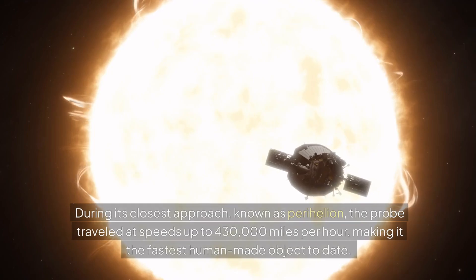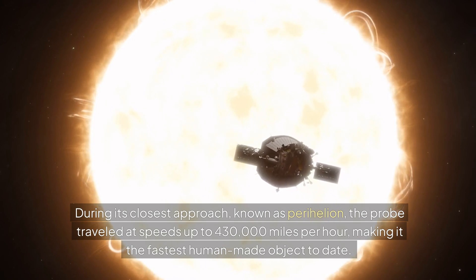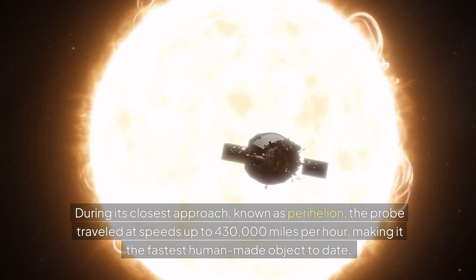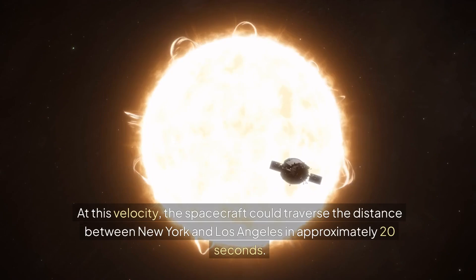During its closest approach, known as perihelion, the probe traveled at speeds up to 430,000 miles per hour, making it the fastest human-made object to date. At this velocity, the spacecraft could traverse the distance between New York and Los Angeles in approximately 20 seconds.